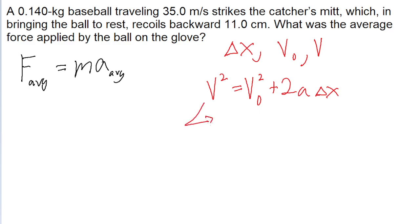So we want to take this formula and rewrite it to solve for acceleration. So this is a pretty easy bit of algebra here. We subtract v naught squared from both sides of the equation. So v squared minus v naught squared. And then we divide both sides of the equation by two delta x. So this is our formula now for the average acceleration.